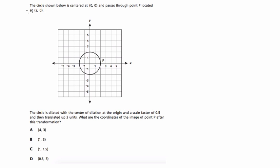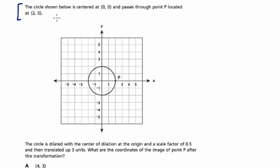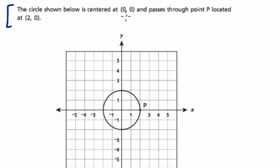I'm going to start by reading the question together. The circle shown below is centered at 0, 0. So here's the center of the circle. That's usually called the origin. And it passes through point P located at 2, 0. So here's point P, and they're telling you, I'll just write it larger, P equals 2, 0.